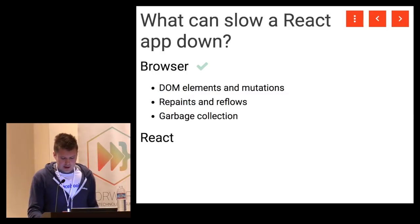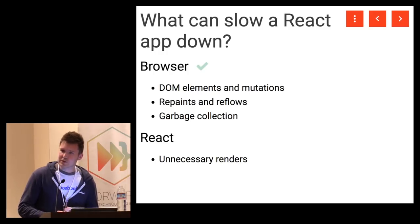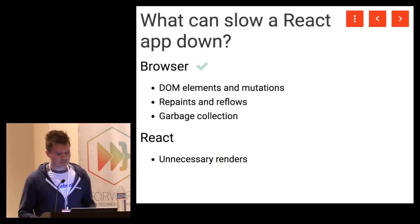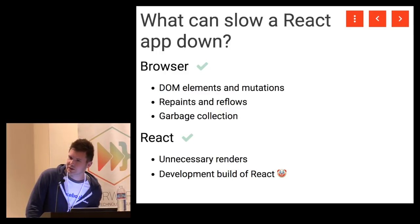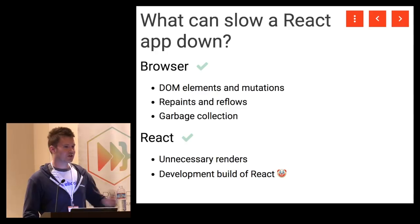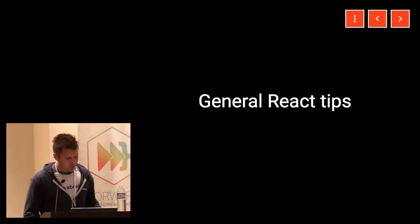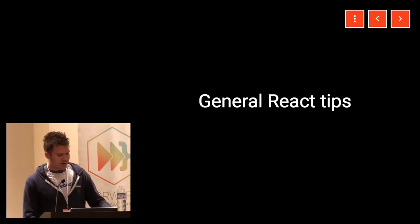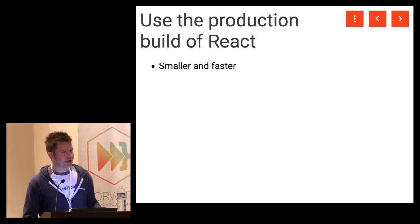Another area of slowness is React components themselves — unnecessary renders, meaning any render that results in the same exact DOM. Also, using the development version of React: we see large production sites from well-known companies running on the development build pretty commonly. Before diving into windowing, here are a couple of general tips. First: use the production build. The production build is faster and tinier — the development build does a lot of checking and gives user-friendly error messages, which we strip out in production.